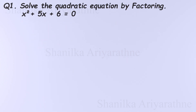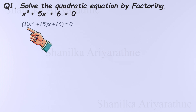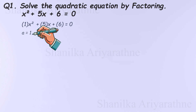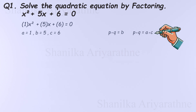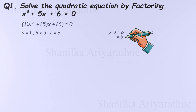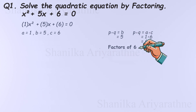Let's see factoring in action. We're solving x-squared plus 5x plus 6 equals 0. First, let's identify the coefficients: a is the coefficient of x-squared — here it's 1; b is the coefficient of x — here it's 5; and c is the constant — here it's 6. We need to find two numbers, p and q, that add up to 5 and multiply to 6. Let's check the factors of 6 to find which pair adds up to 5.